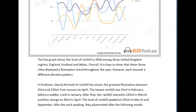The line graph shows the level of rainfall in 2018 among three United Kingdom regions: England, Scotland, and Wales. Overall, it is clear to show that these three cities displayed a fluctuation trend throughout the year; however, each showed a different vibration pattern.